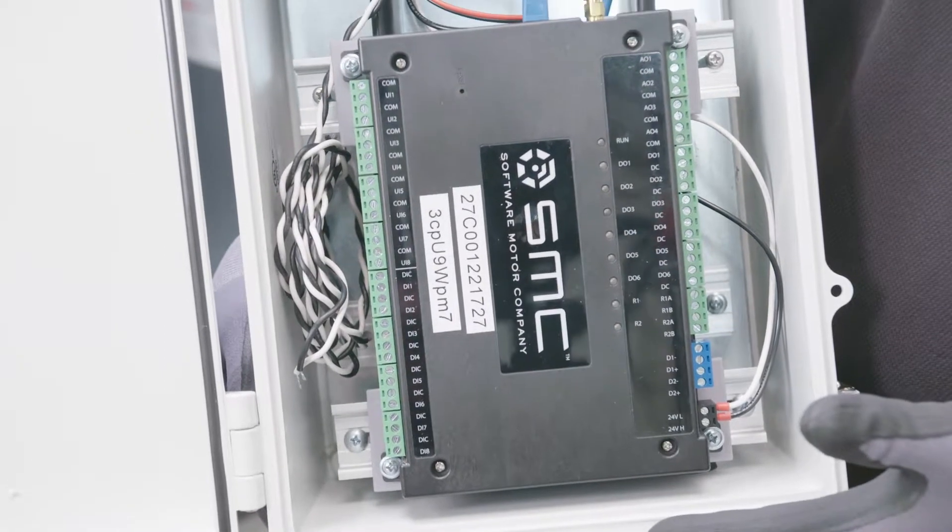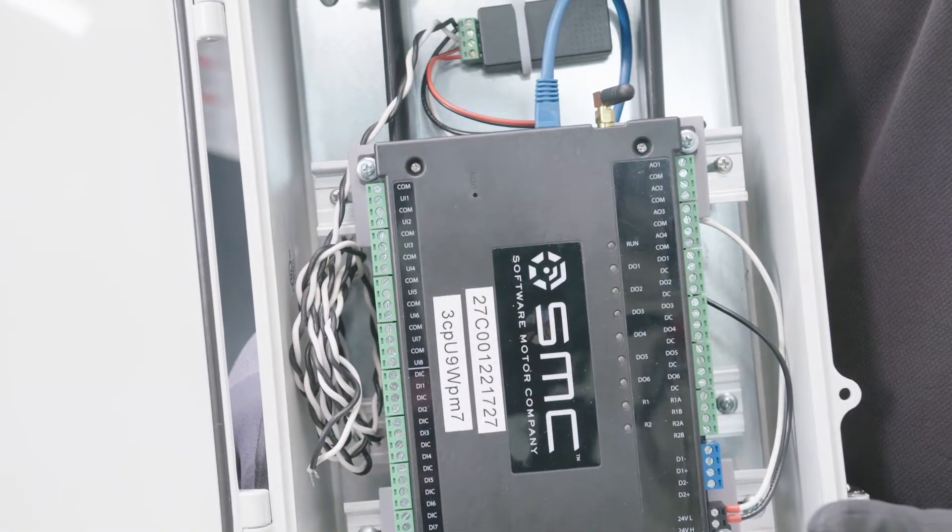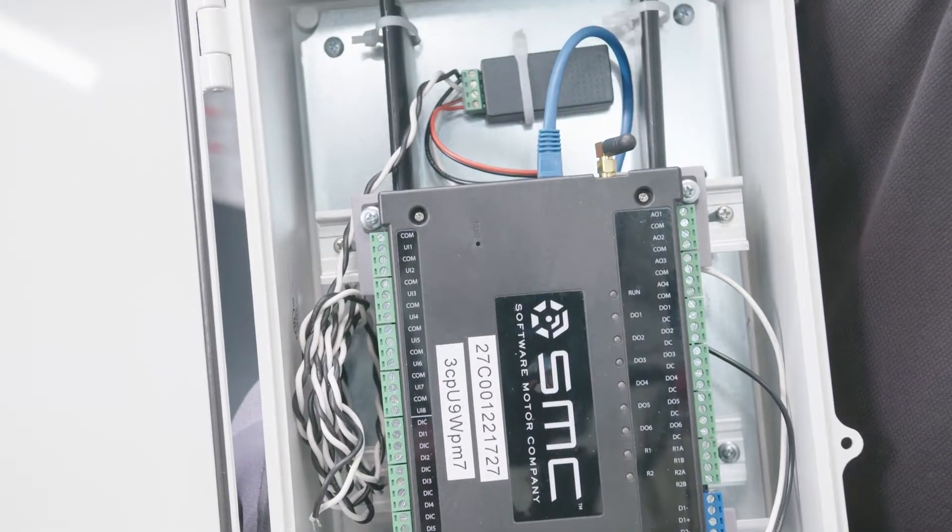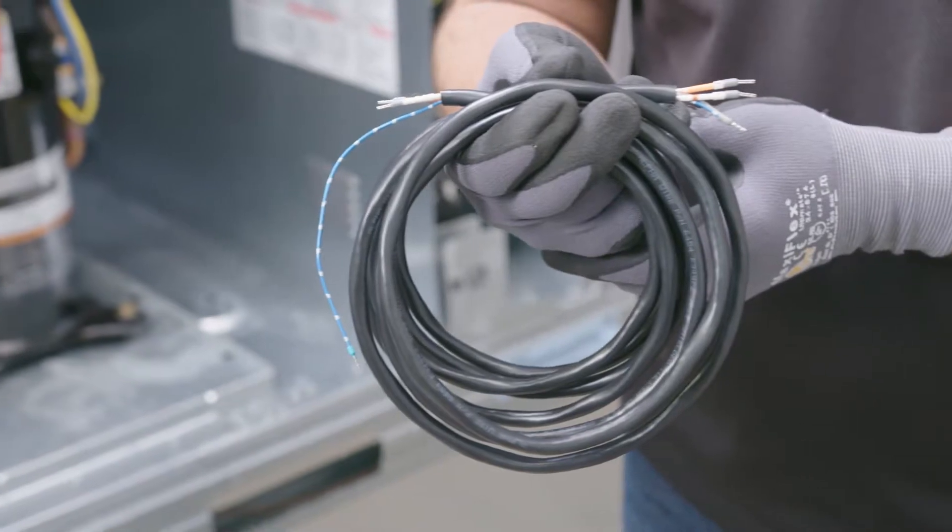The SMC M&V Kit is comprised of a weatherproof enclosure, which comes with an SMC supervisor, a wireless modem, a power meter, three current transducers, and a Modbus communications cable.